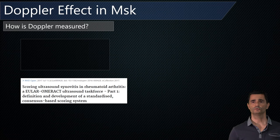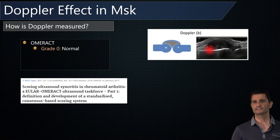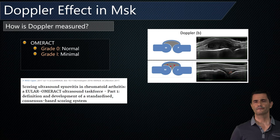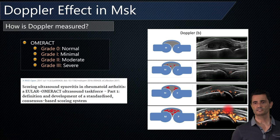How is Doppler measured? We follow the OMERACT recommendations. Grade 0 is normal — you can see the synovium, thick and hypoechoic, with no vessels inside and no vascularization. Grade 1 shows a few small vessels. Grade 2 is moderate vascularization, usually less than half of the synovium studied. Grade 3 is severe, when more than half of the synovium studied shows vascularization. So: 0 normal, 1 minimal, 2 moderate, 3 severe.